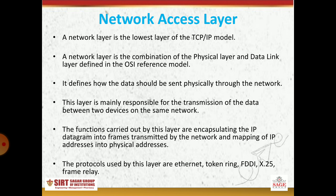Now we study all the layers of TCP IP one by one. Our first layer is the network access layer, which is the combination of the physical layer and the data link layer. The network access layer is the lowest layer of the TCP IP model. It defines how data should be sent physically through the network. This layer is mainly responsible for the transmission of data between two devices on the same network. Functions carried out by this layer include encapsulating the IP datagram into frames transmitted by the network and mapping of IP addresses into physical addresses.